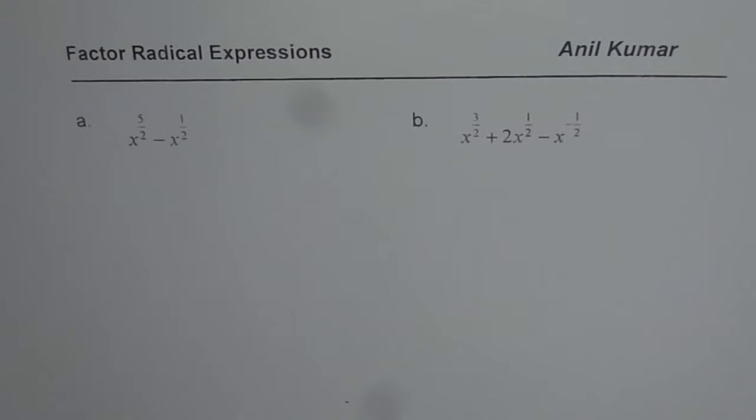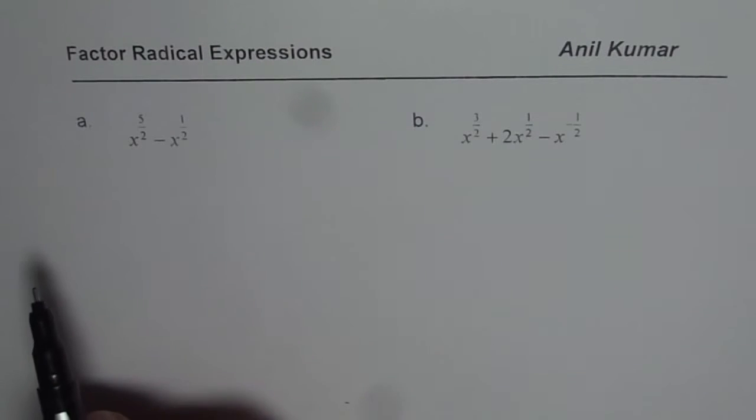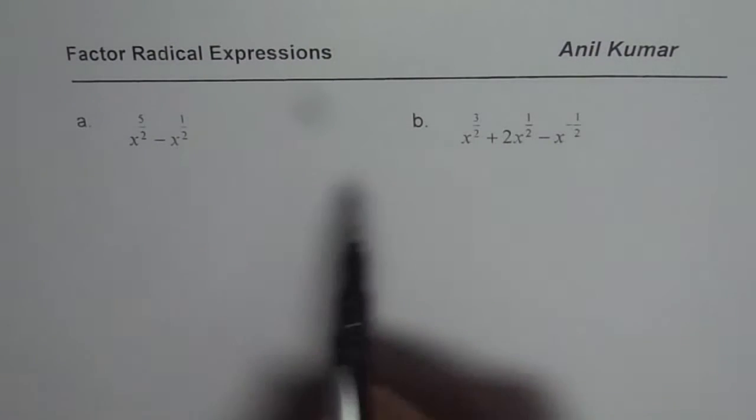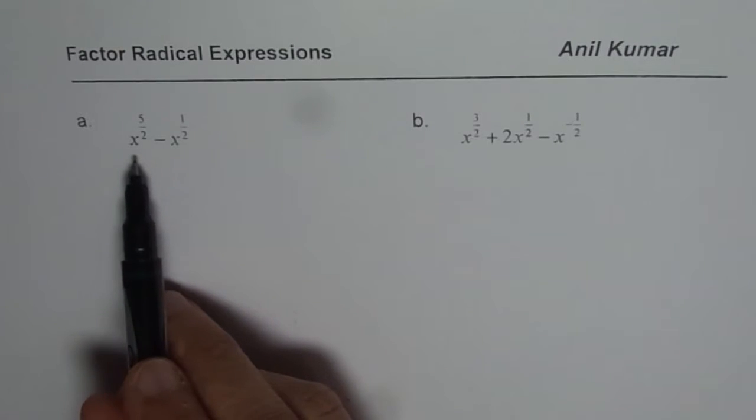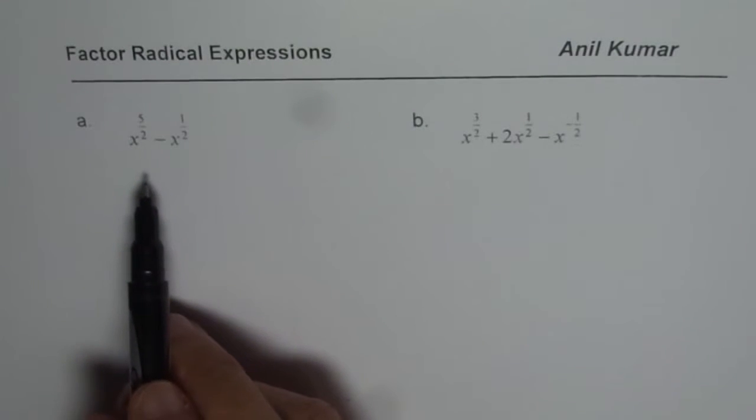I am Anil Kumar and on request of my students, here is another example to understand how to factor radical expressions. So we have two examples here. First one I have taken as two terms, then we have three terms. You can call it binomial. I am not calling it binomial since it is not a polynomial, correct?